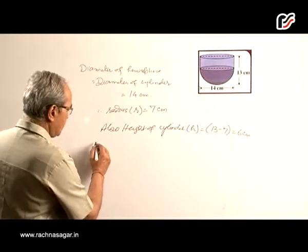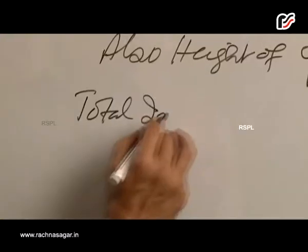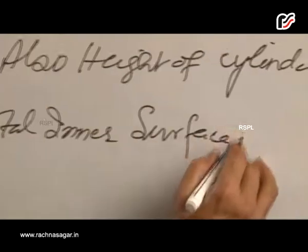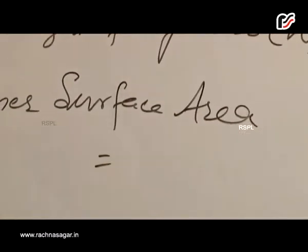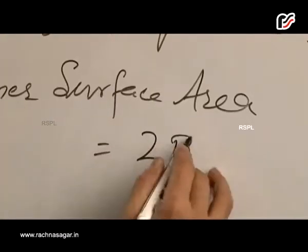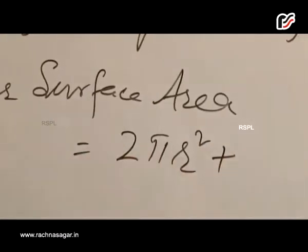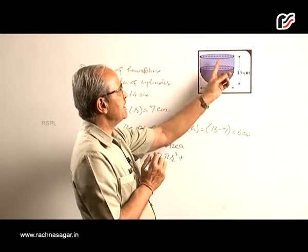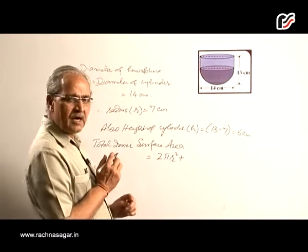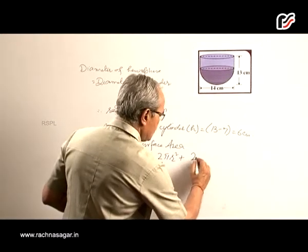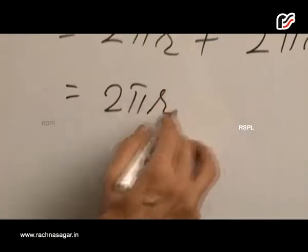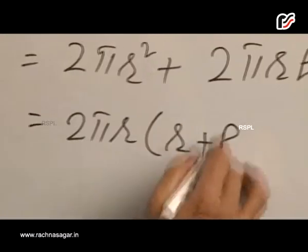Total inner surface area equals the surface area of the hemisphere, that is 2πr², plus the lateral surface area of the cylinder, 2πrh. Since the radius is the same for both, we take 2πr common, giving us 2πr(r + h).